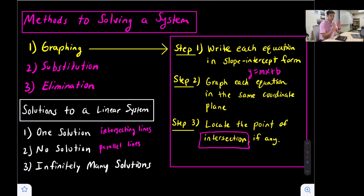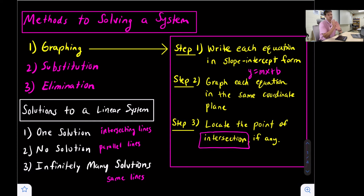If two lines don't intersect, then they are parallel. And then we could have infinitely many solutions, which would be when we have the same lines. We graph two lines and they map right on top of each other — they're called coinciding lines. Basically every point is a solution on both equations since they're just the same line, so there are infinitely many solutions.